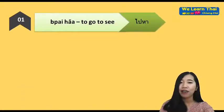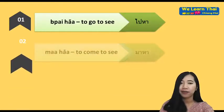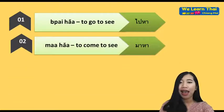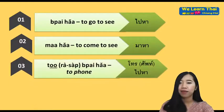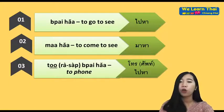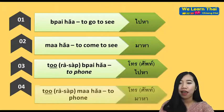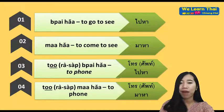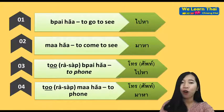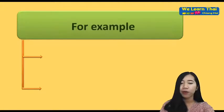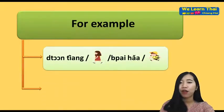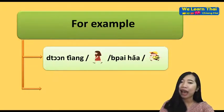ไปหา (pai ha) means 'to go to see' someone. มาหา (ma ha) means 'to come to see' someone. โทรศัพท์ไปหา or โทรไปหา means 'to call someone.' โทรศัพท์มาหา or โทรมาหา means 'for someone to call you.' For example: ตอนเช้า ดิฉันไปหาเขา — In the morning, I went to see him. ตอนบ่าย เขาไปหาแฟน — In the afternoon, he went to see his girlfriend.